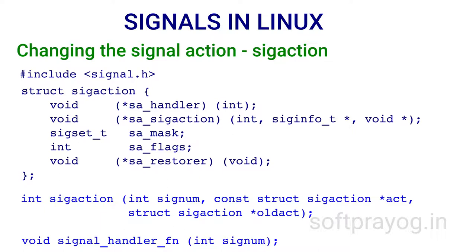Flag SA_NOCLDSTOP is for SIGCHLD and means that SIGCHLD should not be delivered when a child stops or starts. Similarly, SA_NOCLDWAIT is also for SIGCHLD and means that children should not be transformed into zombies when they terminate. Flag SA_RESTART means that if a thread is blocked in a system call like read and a signal comes, it should be restarted when execution of the signal handler is over. The member SA_RESTORER is not to be used by application programs.